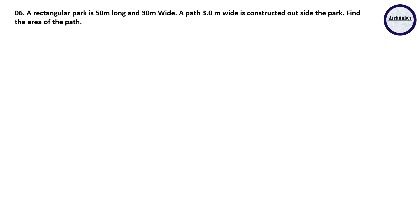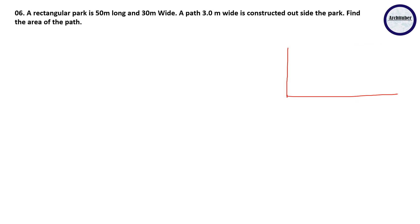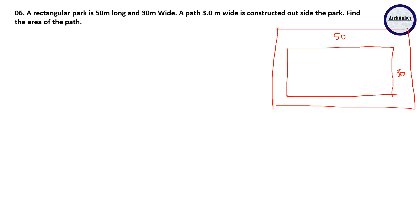Question six: a rectangular park is 50 meters long and 30 meters wide. A path 3 meters wide is constructed outside the park on each side. We need to find the area of the path. Let's first draw the plan of the park (ABCD = 50 by 30), then the outer rectangle (PQRS) which includes the 3-meter path on each side.